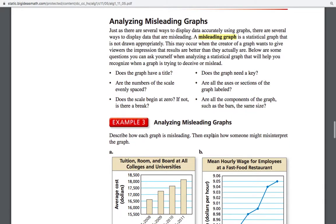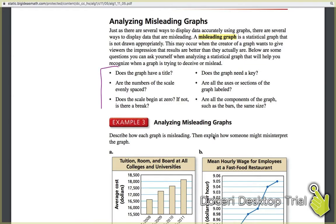The last thing in this section is misleading graphs. And a lot of times guys, you're going to go into graphs where something's not right with it. And you see a bunch of things to look at here. If it's going to be a good graph, it needs, you need to be able to answer all of these things. It's gotta have a title. It's gotta have a key if it needs a key, right? If there's more than one line on it, we got to know which line represents what. Are the numbers evenly spaced? Are the axes labeled? Does it begin at zero?